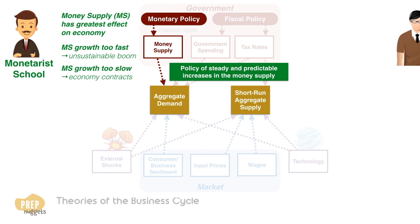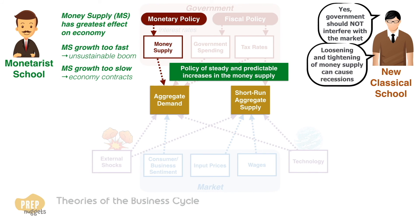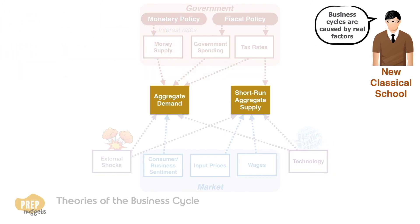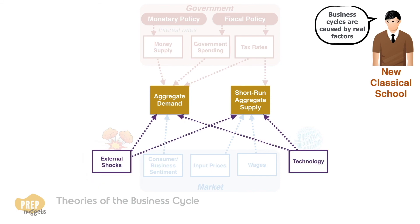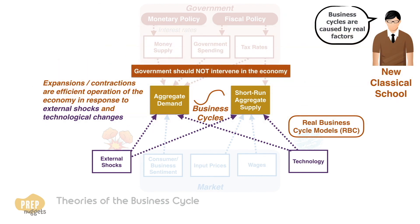Lastly, the new classical school economists also argue against government intervention, as the predictable loosening and tightening of money supply itself can cause a recession, as businesses would just wait for easy money to start investing. New classical models do not include money, but hold that business cycles are caused by real factors such as changes in technology and external shocks. Such models are called real business cycle models. New classical economists believe that expansions and contractions represent efficient operation of the economy in response to external real shocks and technological changes — again justifying that the government should not intervene.